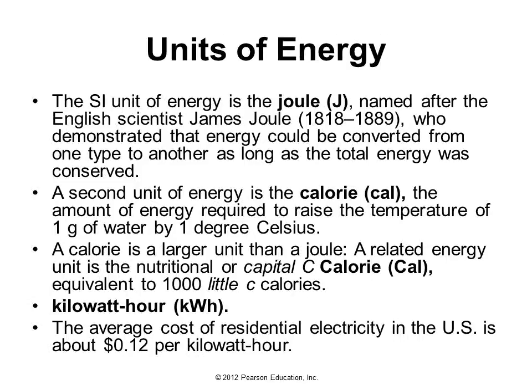The SI unit of energy is the joule, abbreviated J, named after the English scientist James Joule, who demonstrated that energy could be converted from one type to another as long as the total energy was conserved. A second unit is the calorie, abbreviated cal — it's the amount of energy required to raise one gram of water by one degree Celsius. Food calories use a capital C, which is a larger unit: 1000 small calories equal one food Calorie. One small calorie equals 4.184 joules.